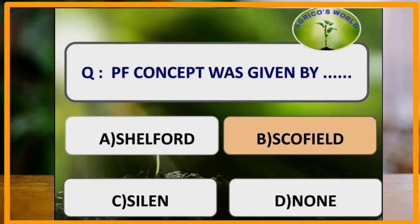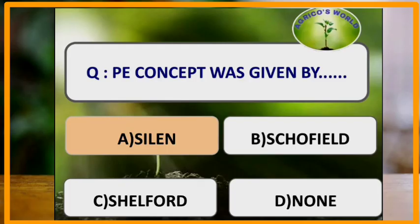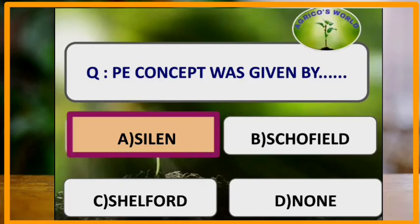The PF concept was given by Schofield. The PE concept was given by Cillien. Don't confuse between the scientists — PF was given by Schofield, PE by Cillien, PH concept was given by Sorensen, and the law of tolerance was given by Shelford.